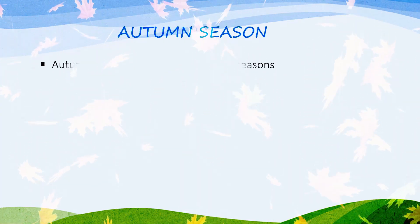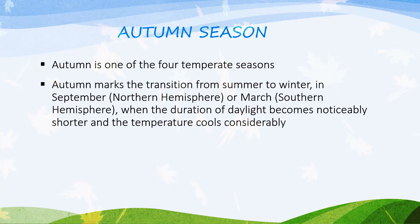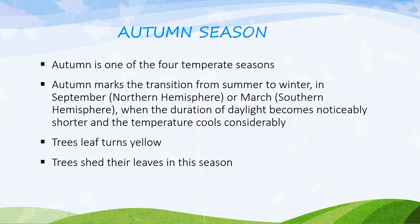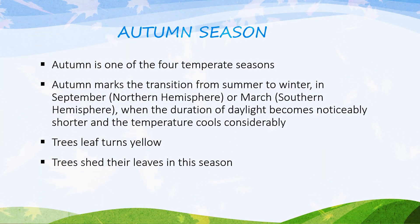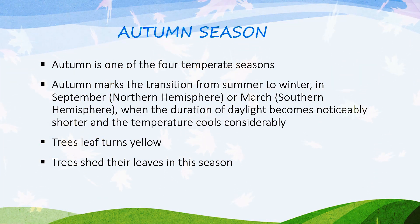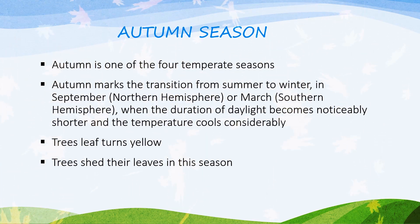Autumn is one of the four temperate seasons. Autumn marks the transition from summer to winter — in September in the Northern Hemisphere, or March in the Southern Hemisphere. When the duration of daylight becomes noticeably shorter, the temperature cools considerably. Trees' leaves turn yellow, and trees shed their leaves in this season.